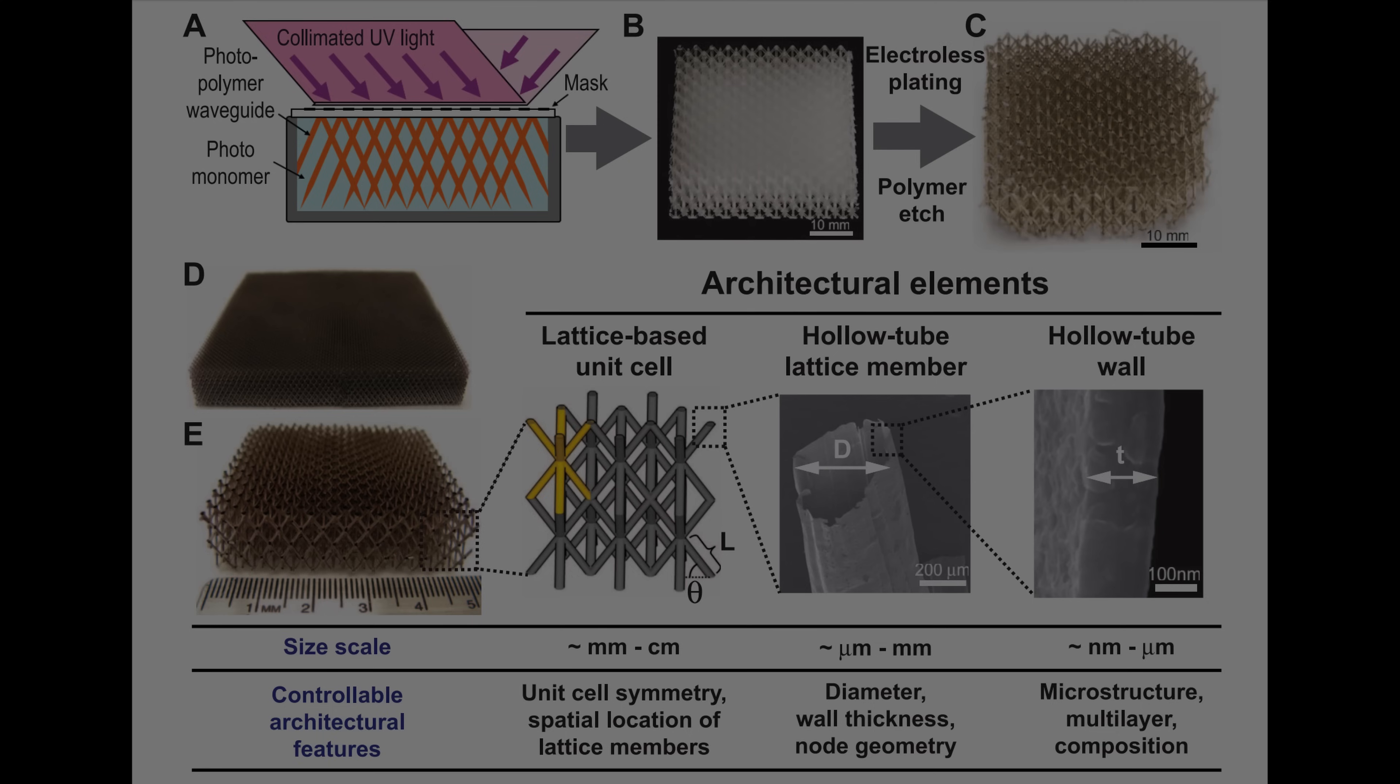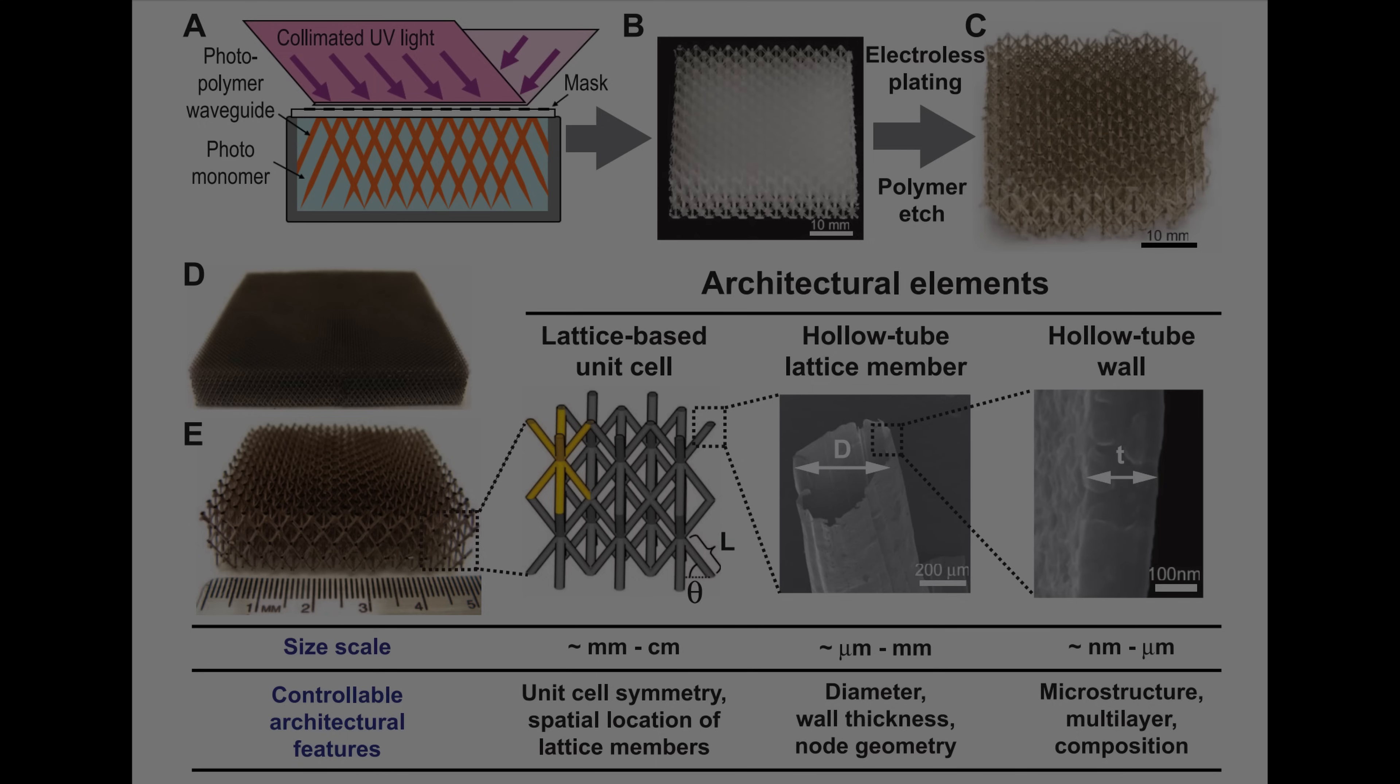After coating their lattice in nickel, they used the final and really nice property of their photoresin, which is that it was dissolvable in a certain solution. In this case, it was 3 molar sodium hydroxide. After 12 hours of soaking, the polymer dissolves away and you're left with these hollow lattice structures made out of very thin nickel. The walls of the nickel tubes were only about 100 to 150 nanometers thick. Because the structure was hollow, it was very lightweight. And because it was patterned in this lattice structure, it was also very stiff.